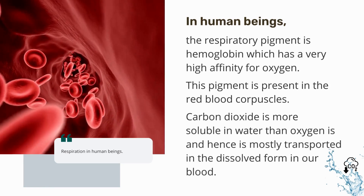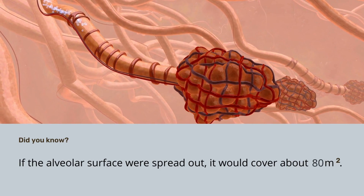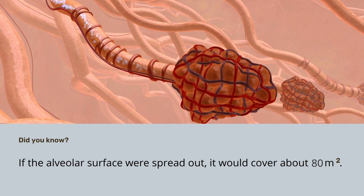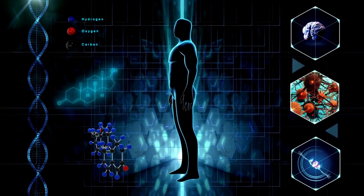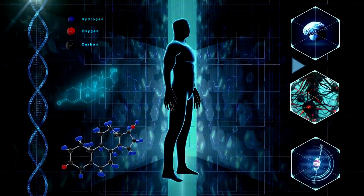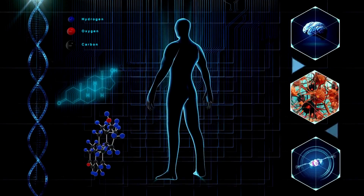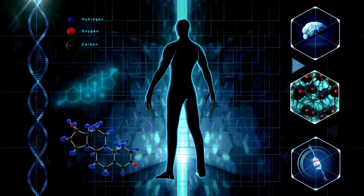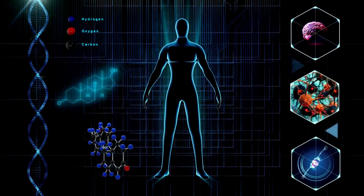Here is an interesting fact: if the alveolar surface were spread out, it would cover about 80 square meters. To put this in perspective, the average body surface area for adult men is 1.9 square meters and for adult women is 1.6 square meters. Because of this large surface area available for exchange, the exchange of gases becomes very efficient.